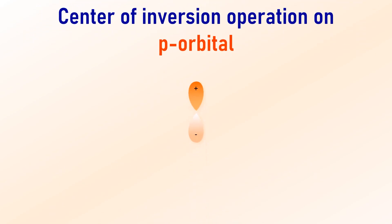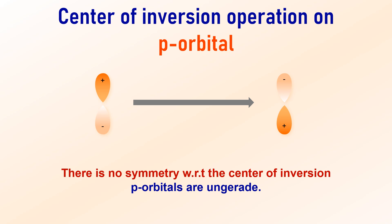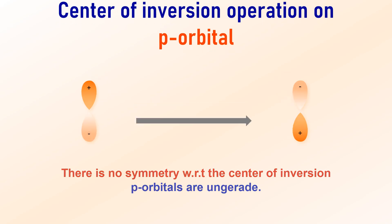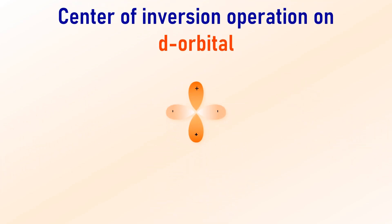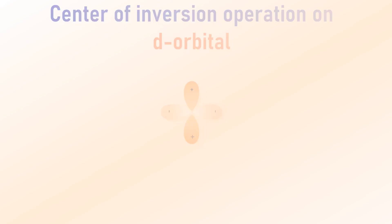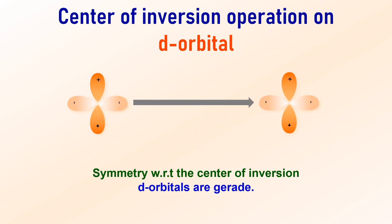Let us now determine if the P orbital is gerade or ungerade by performing the centre of inversion symmetry operation. After the operation, we see that the phases of the P orbital's lobes are not the same, indicating that the P orbital is ungerade. Next, let us check the symmetry of the D orbital. Since the phases of the D orbital's lobes remain the same after the inversion, we classify the D orbital as gerade.